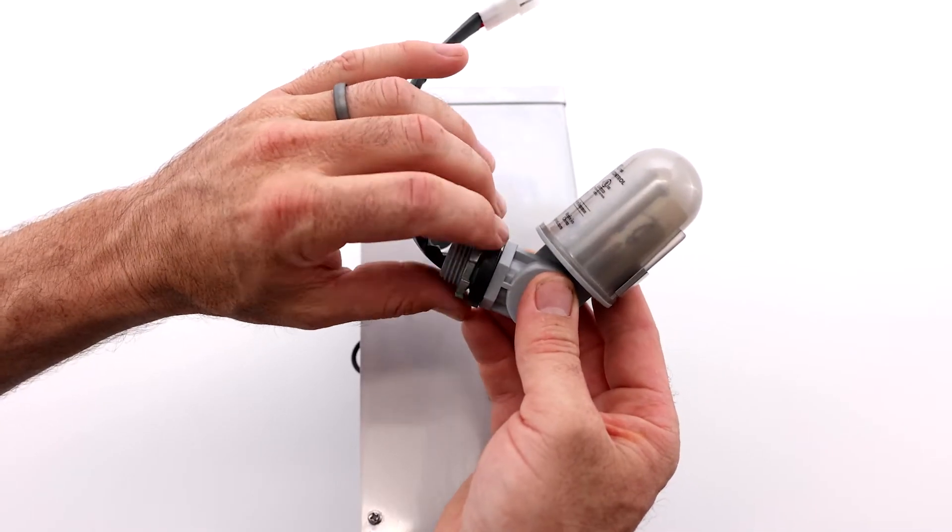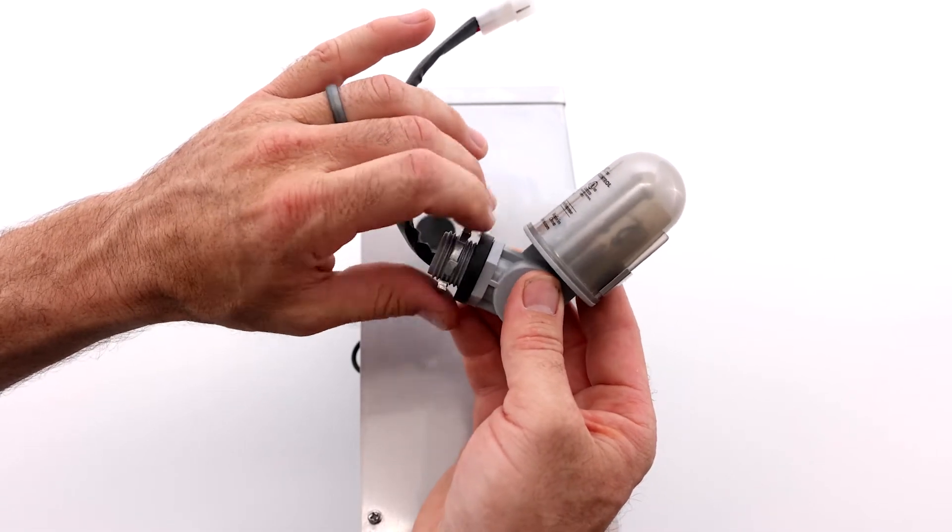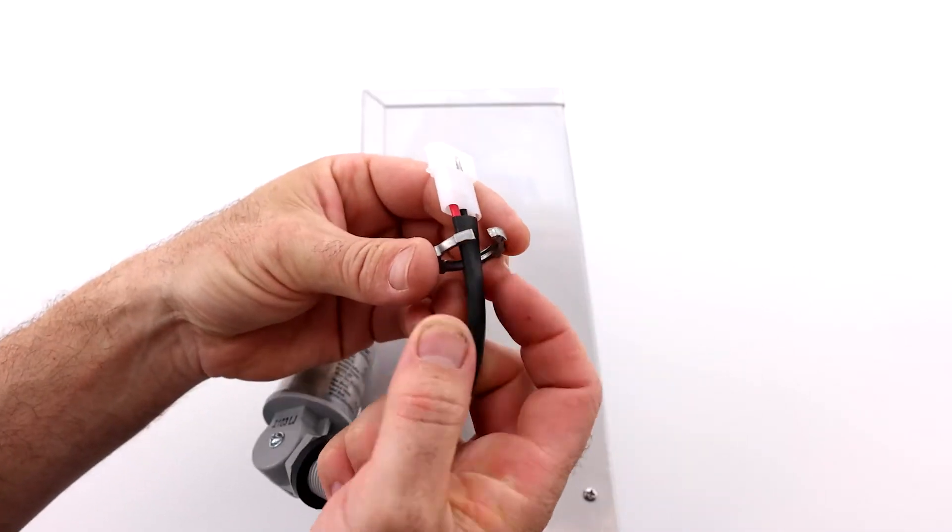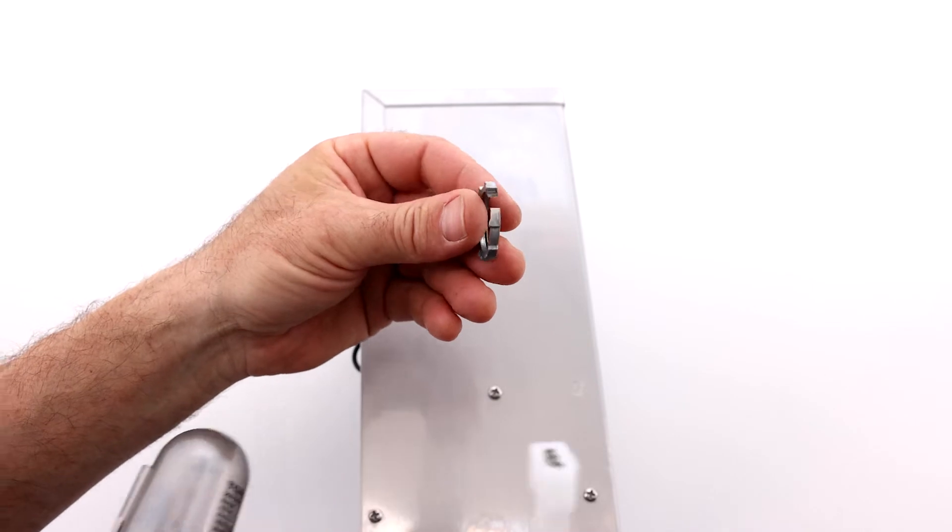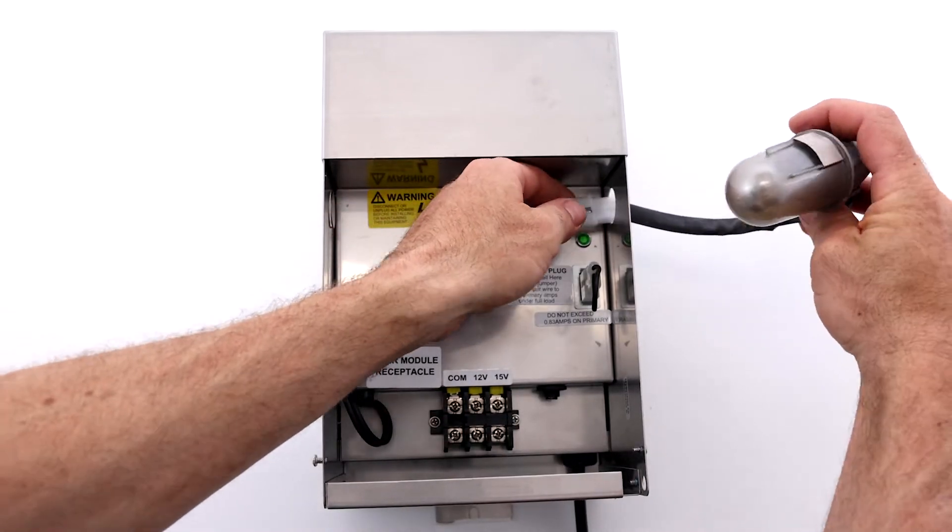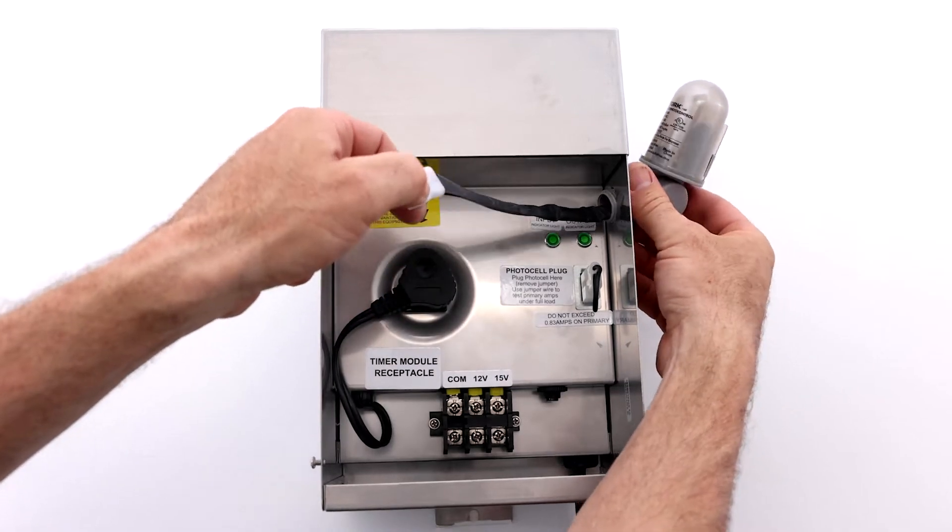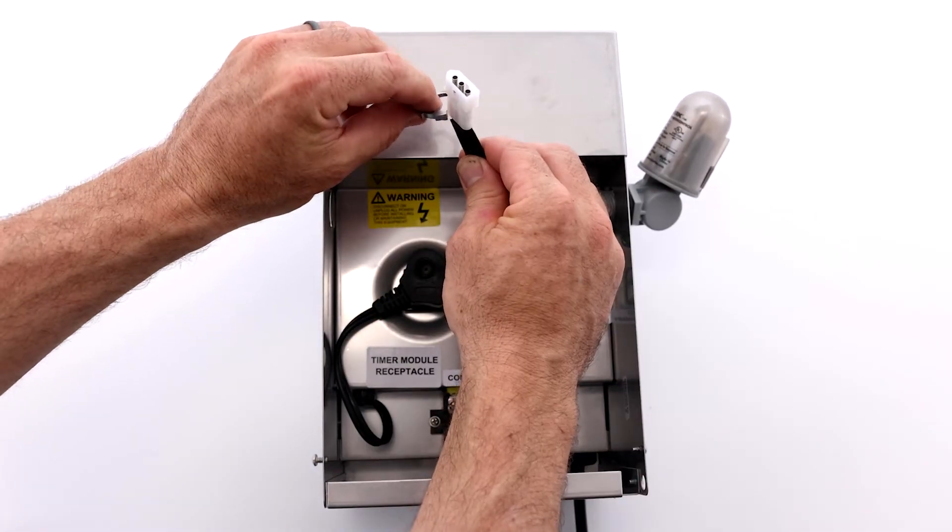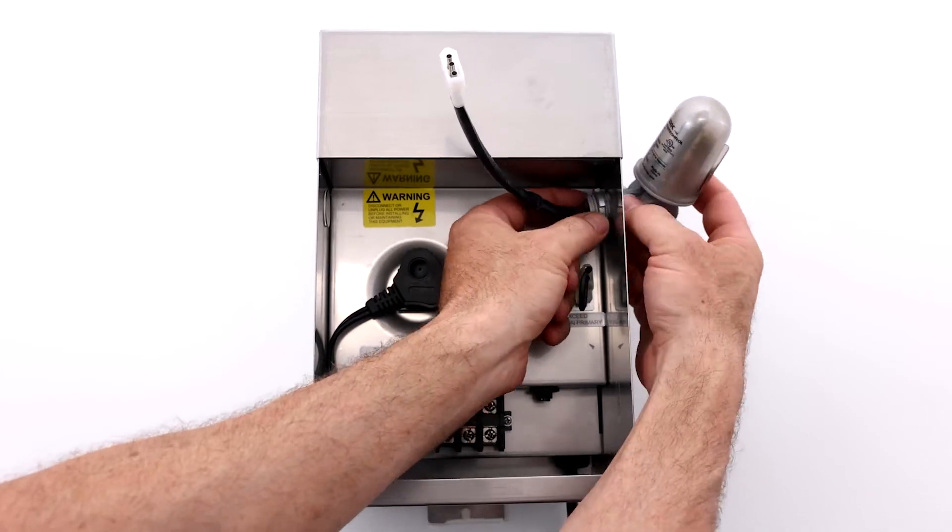Remove the nut holding the photocell fittings together, and you will see a notch where you can remove it from the wire. Put the wire through the hole. Put the nut on the other side. Tighten.